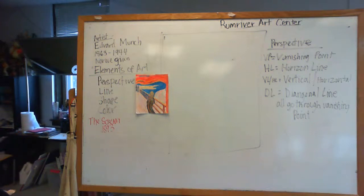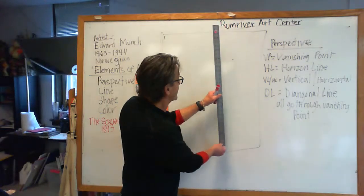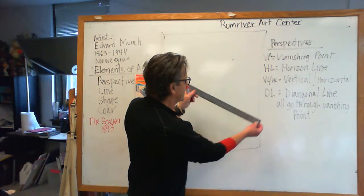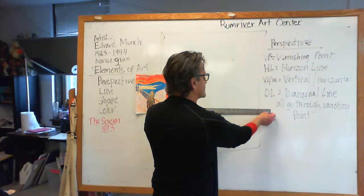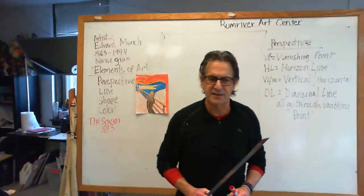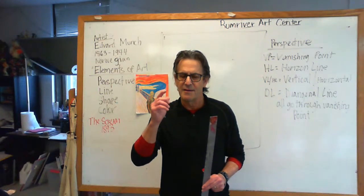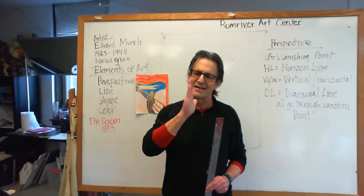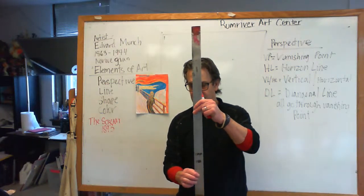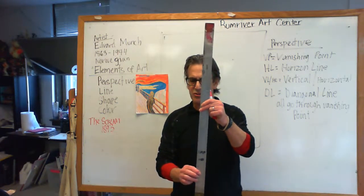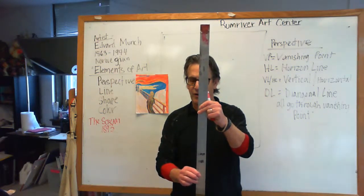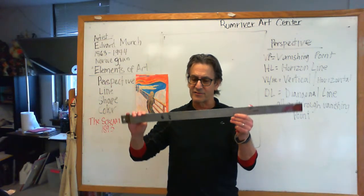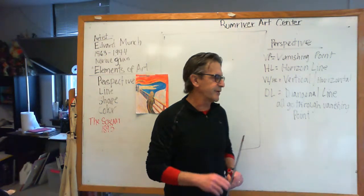I'm going to show you with my trusty ruler here. A vertical line has to be perfectly straight up and down, and a horizontal line has to be perfectly horizontal. That's what creates the perspective. When you look at drawings, your eye is going to try to trick you — your eye will start making those lines tilt instead of being straight up and down. So you want to keep checking your work as you go, making sure your lines are straight up and down when they're supposed to be vertical, and straight across when they're supposed to be horizontal.